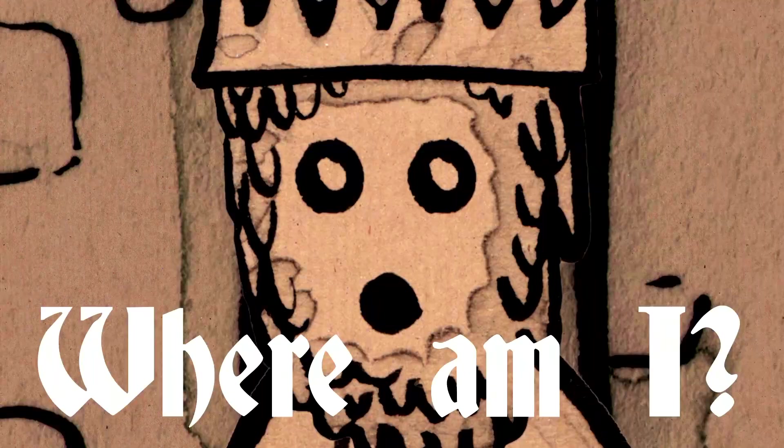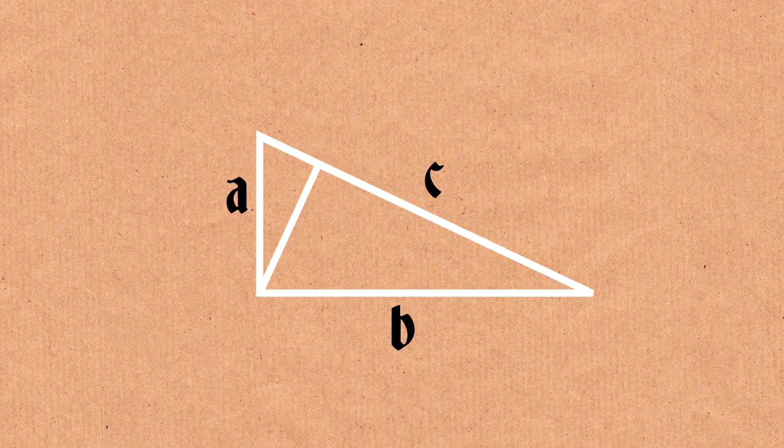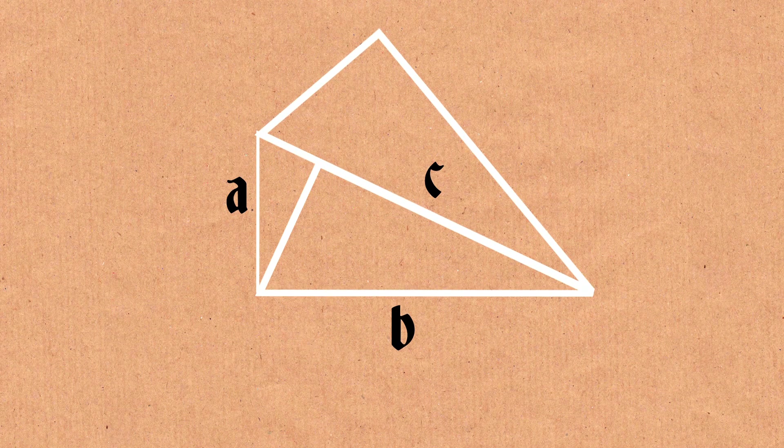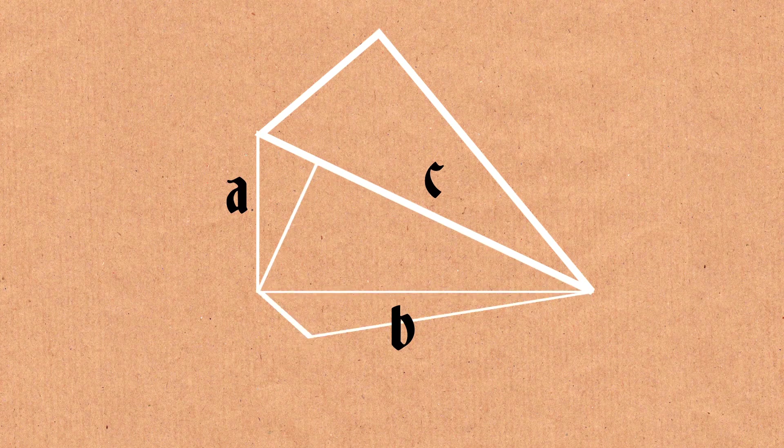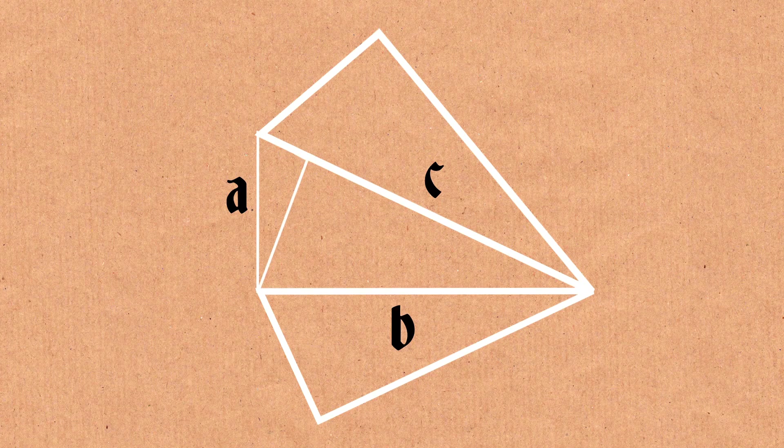there you are. Where am I, says the king. The blob whose linear edge is C is the entire triangle. The blob whose linear edge is B is the triangle to the right. The blob whose linear edge is A is the triangle to the left.